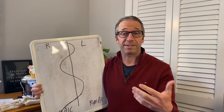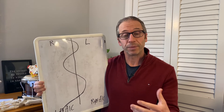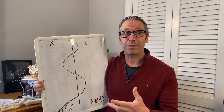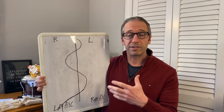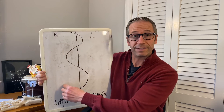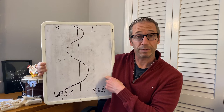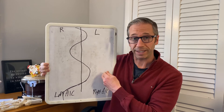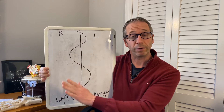Postural restoration talks about this left AIC pattern that people get stuck in. There's also a right AIC pattern, which a lot of people think they're in, but they're really not. The left AIC pattern is simply describing a body that is getting stuck on the right side. The right AIC pattern describes a body that is on the left side, but we don't get stuck in a right AIC pattern — we get stuck in a left AIC over on the right side of the body.